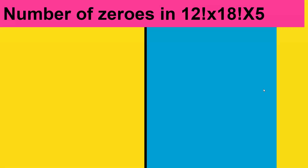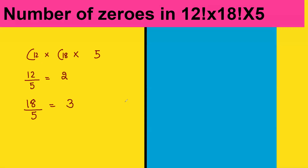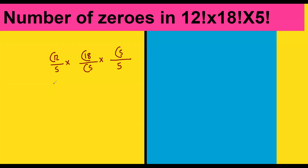Now find the number of zeros in 12 factorial times 18 factorial times 5. For 12 factorial: 12 ÷ 5 = 2 — no need to go further. For 18 factorial: 18 ÷ 5 = 3. For the standalone 5: that contributes 1 power of 5. So we have 2 + 3 + 1 = 6 total powers of 5, giving us 6 trailing zeros.